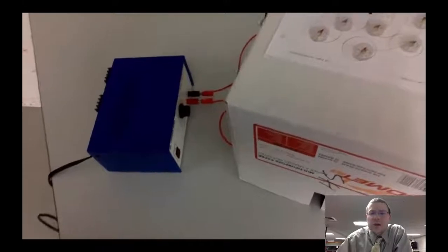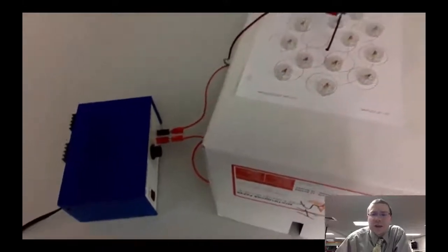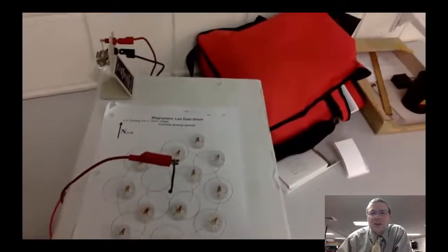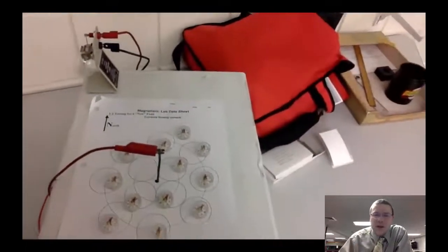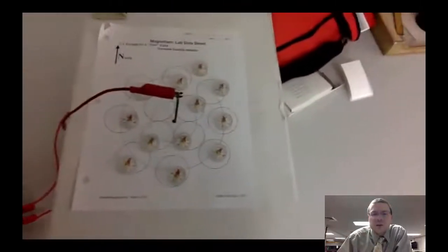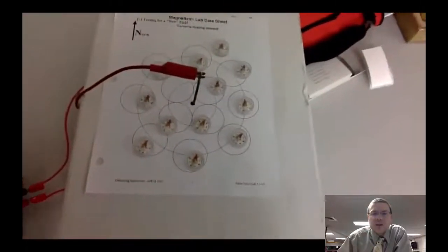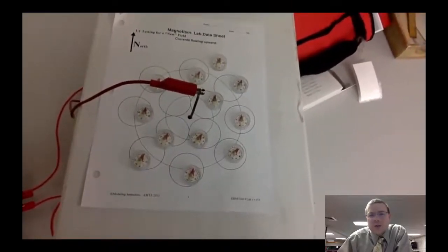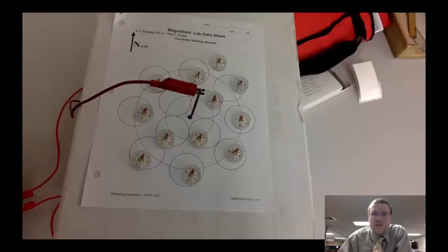With the first setup, we had a power supply attached to a light bulb. That light bulb had a wire that went straight through the page, and we put compasses around the setup. If you look, all those compasses are pointing towards magnetic north — pointing towards the north pole — because that's the magnetic field they're sensing at this time.